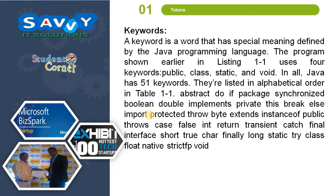A keyword is a word that has a special meaning defined by the Java programming language. The program shown earlier uses 4 keywords: public, class, static, and void. In all, Java has 51 keywords, listed in alphabetical order in table 1.1.